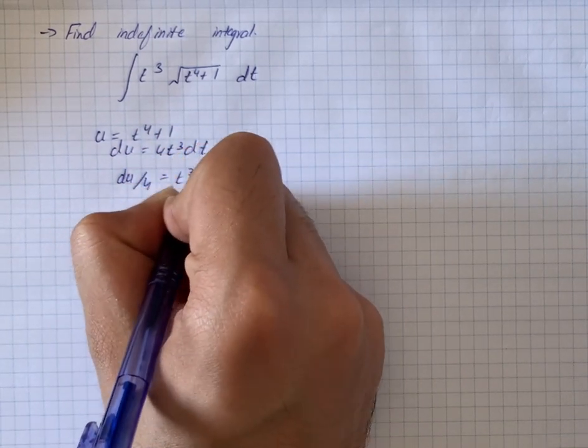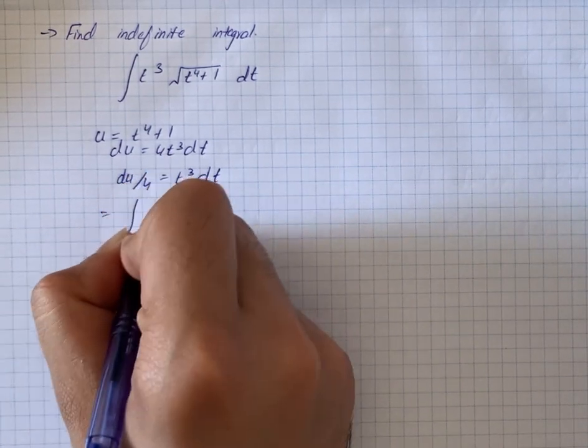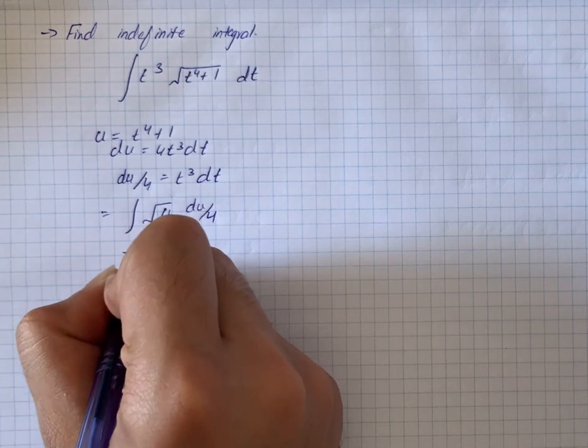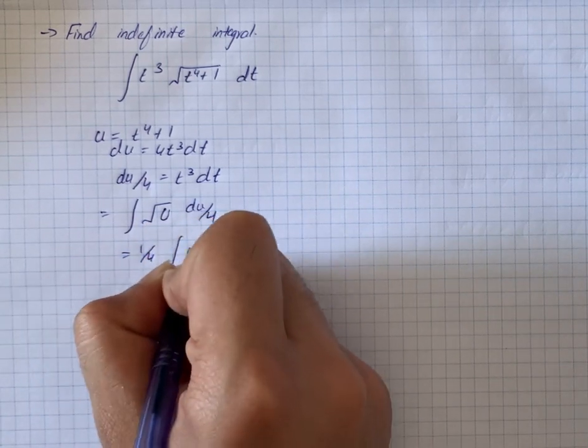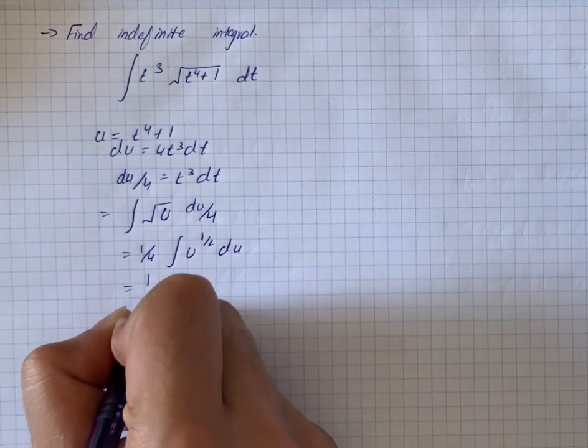So the integral becomes under root u into du by 4. So we have 1 by 4 into u raised to 1 by 2 into du. So we can write 1 by 4 into u raised to 3 by 2 divided by 3 by 2 plus c.